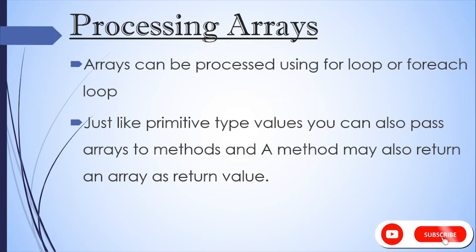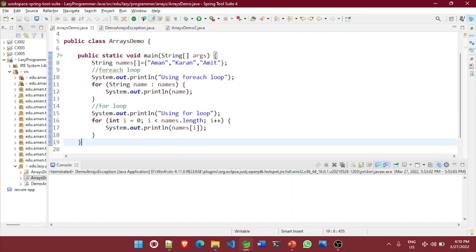Now, let's see how we can process the arrays. When processing array elements, we often use either for loop or for each loop because all the elements in an array are of the same type. And the size of array is known or can be calculated using its length property. Just as we can pass the primitive type values to the methods, we can also pass arrays to the method as an argument or a method may also return an array as a return value. Now let's see how we can process the arrays. So this is a names array where I have three names already added in this array.